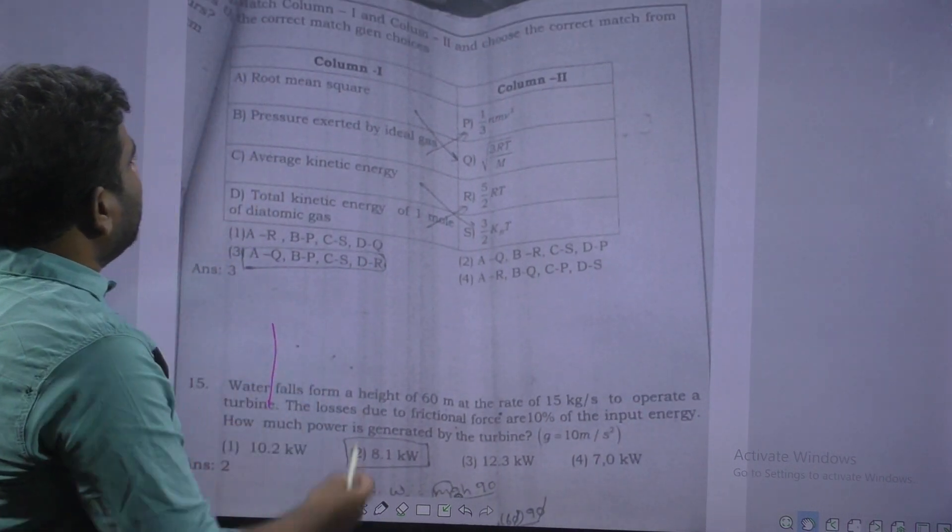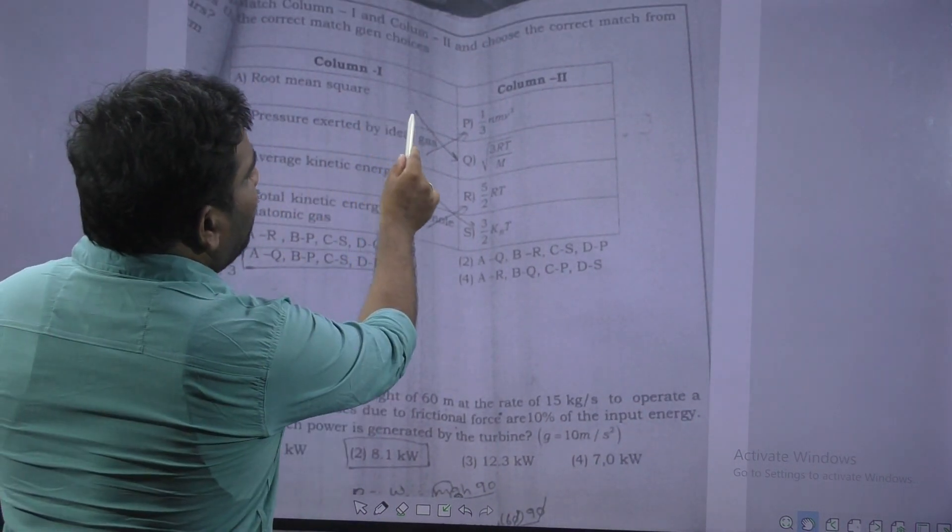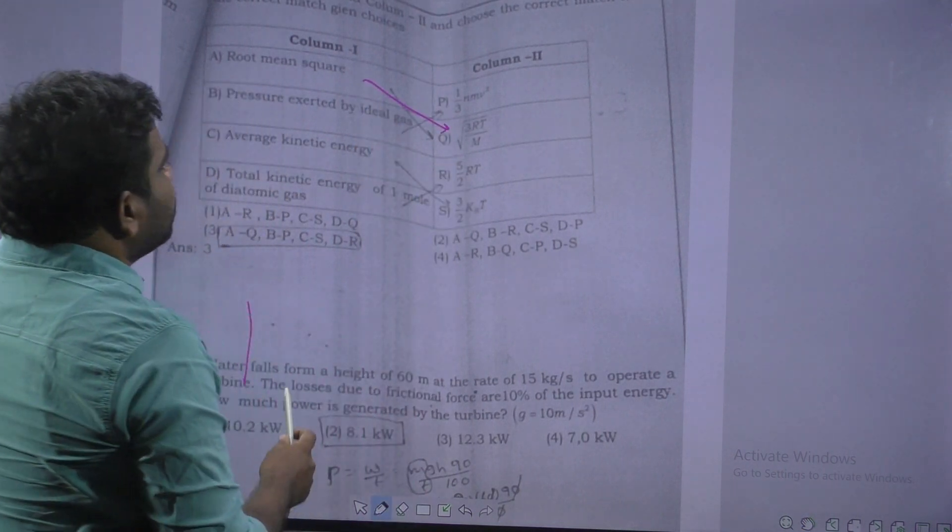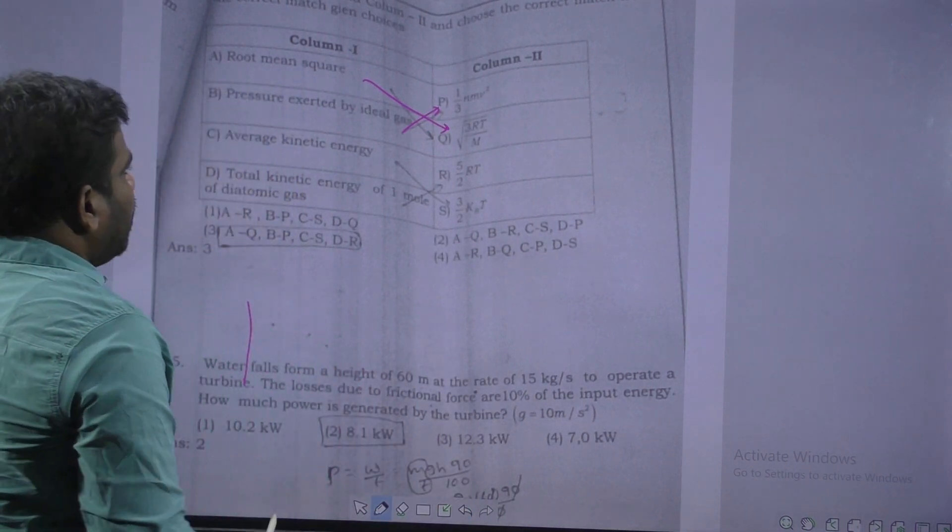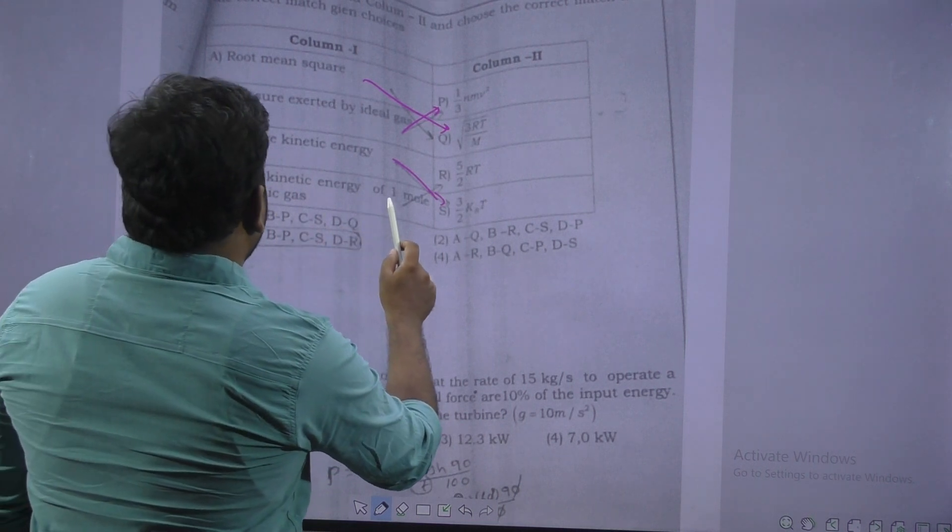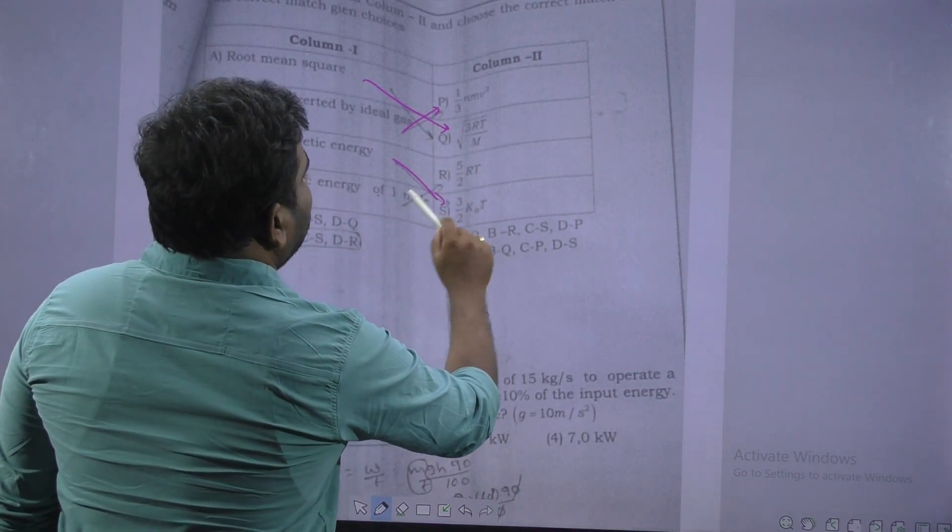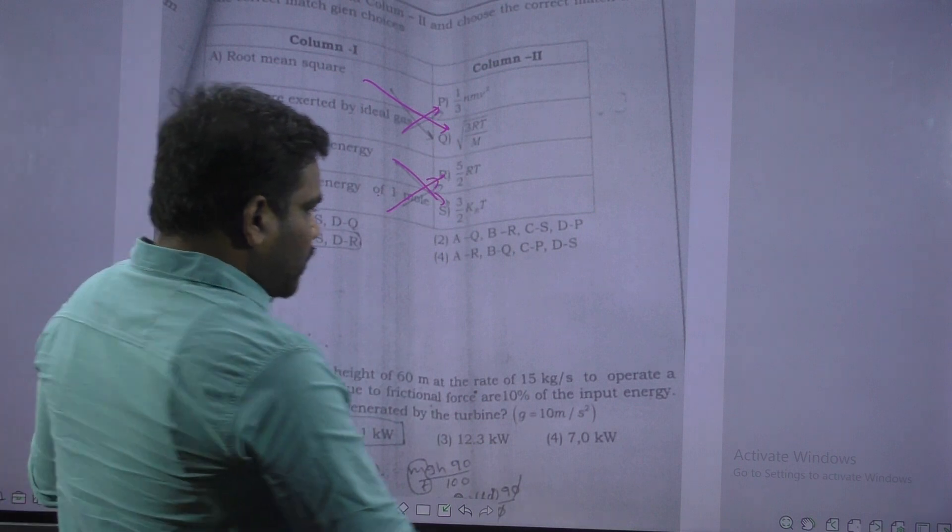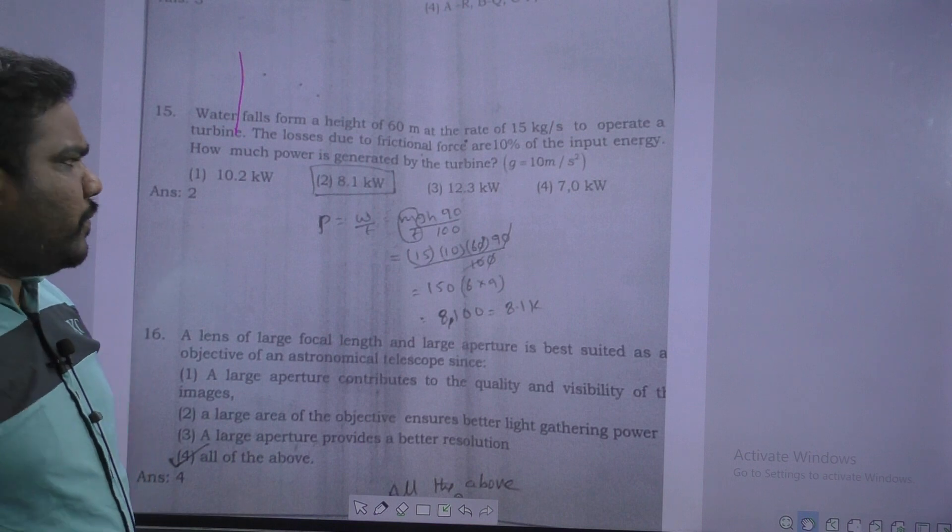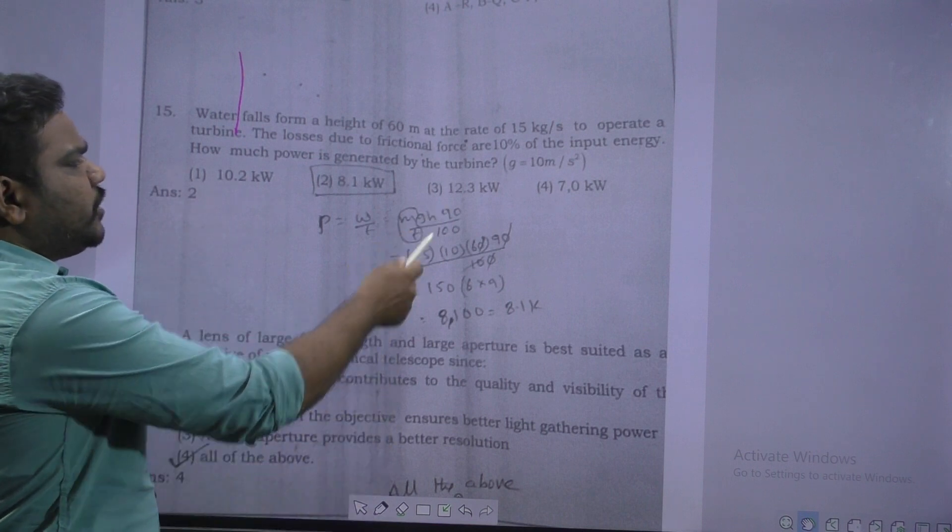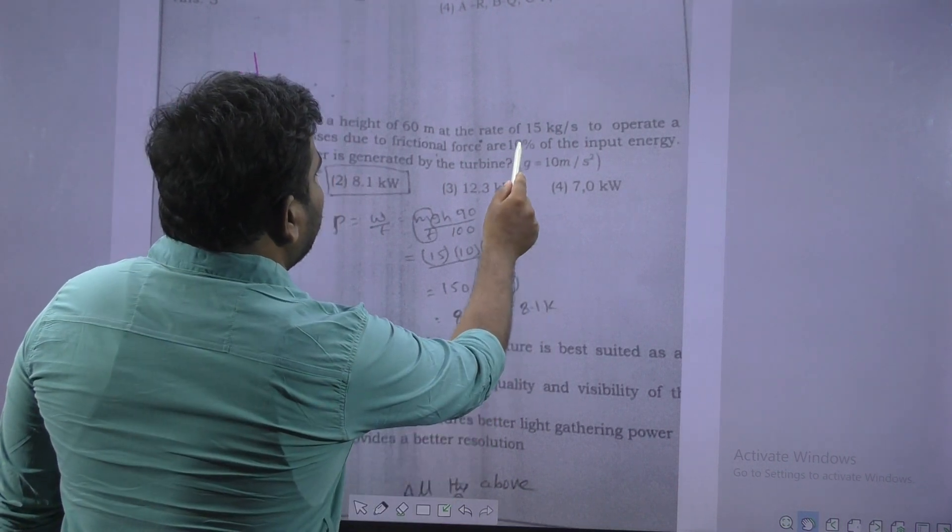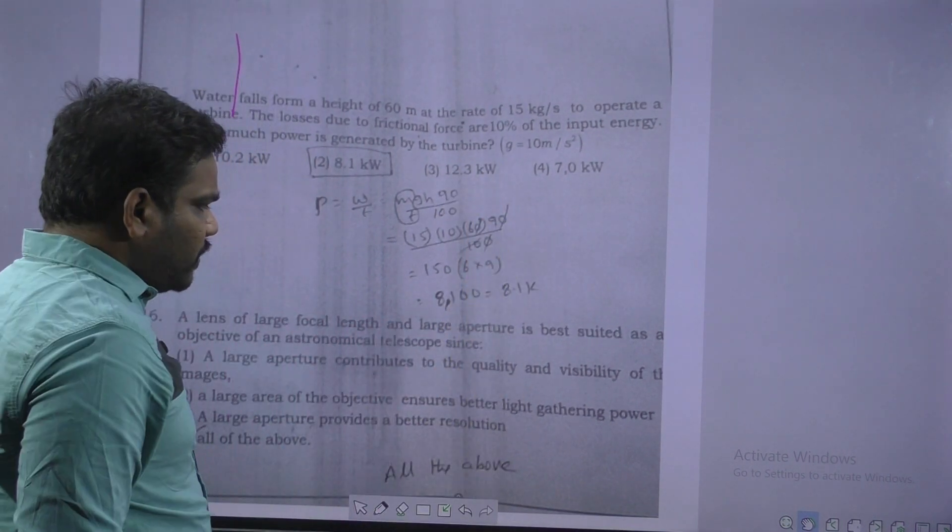Next question. This is matching. Root mean square velocity belongs to root 3r by 3 by m. And pressure exerted by is 1 by 3 nmv square. Average kinetic energy is 3 by 2 kt. Total kinetic energy for diatomic is 5 by 2 rt. Next question. Here is asked power, direct formula, work done by time. Mgh into 90 by 100. After calculation, 8.1 kW. So it is 10 percent you subtract, remaining 90 percent.